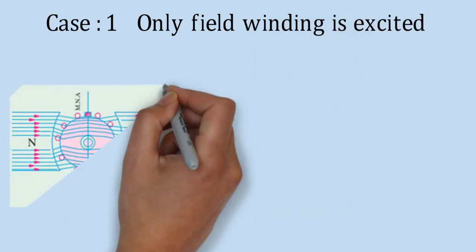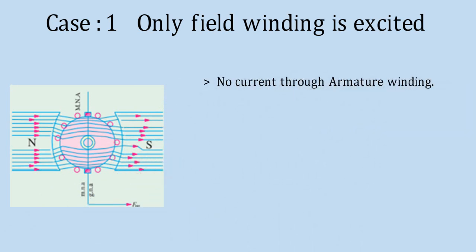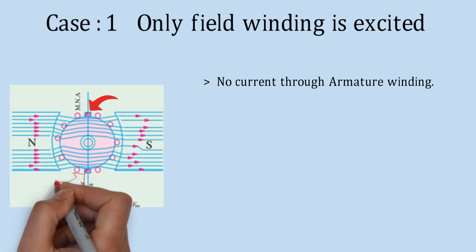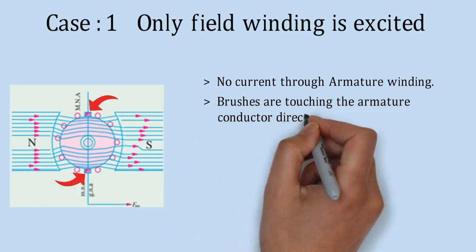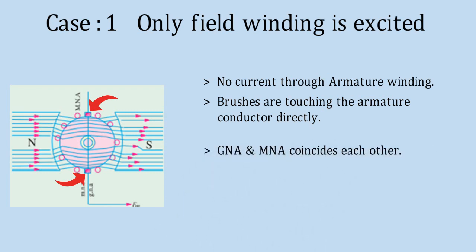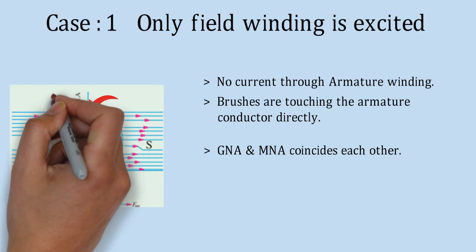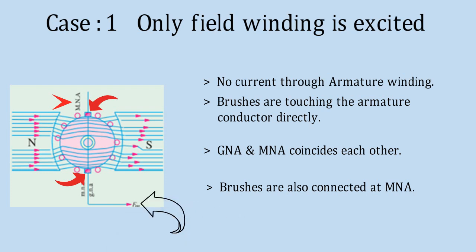Case 1, when only field winding is excited. From the figure, we can see that armature winding is not connected with supply. Brushes are touching armature conductor directly. Here, we can see that both GNA and MNA coincide with each other, and brushes are also connected with MNA. Term FM is indicating the direction and magnitude of field flux.